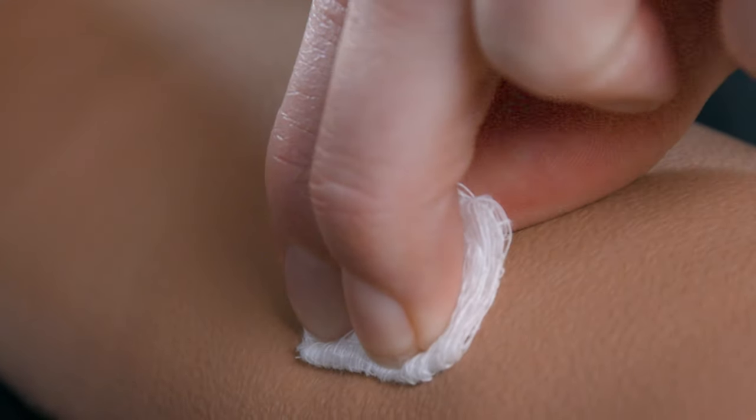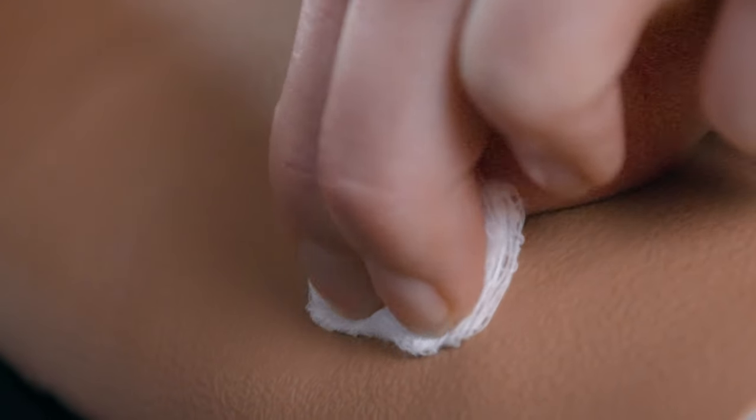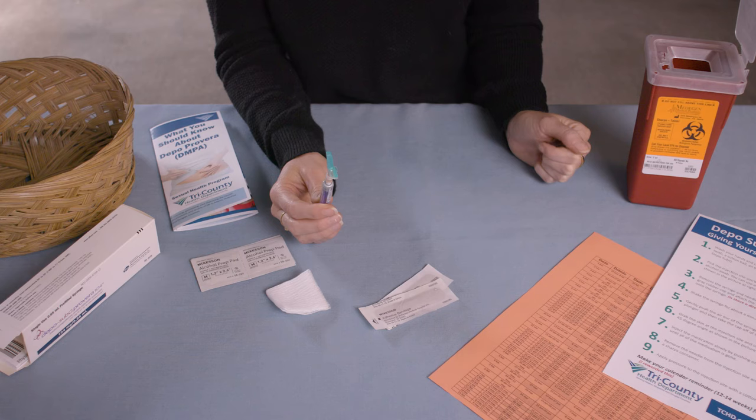Take your cotton ball and press it to the area that you just gave your injection. It is important not to rub the area. If you notice any bleeding, you can apply a bandage.